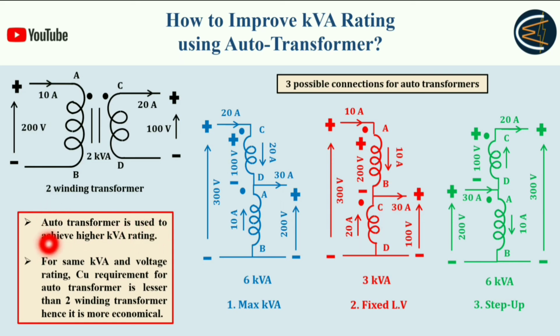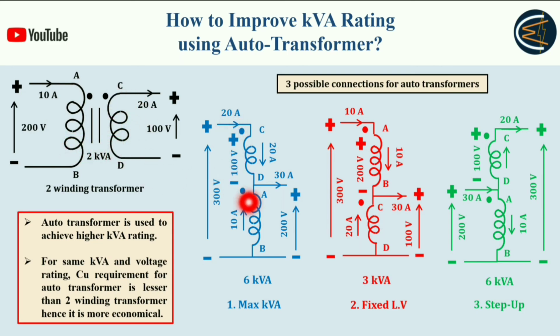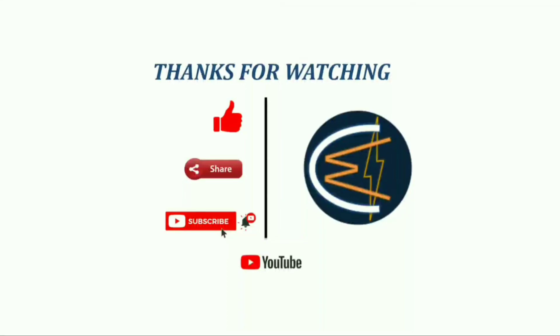The advantages of auto transformers include: achieving higher KVA rating, and for the same KVA and voltage rating, the copper requirement for an auto transformer is less than for a two-winding transformer — hence it is more economical. If you compare this two-winding transformer with any of these three auto transformer connections, the auto transformer achieves higher KVA with the same copper. If two transformers have the same rating, the auto transformer will definitely have less copper requirement. I hope you enjoyed this video — please like, share, and subscribe. Thanks for watching, goodbye.